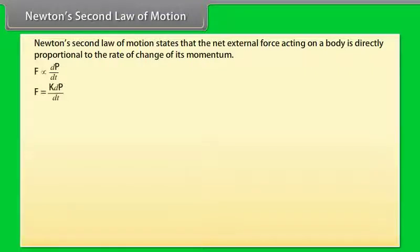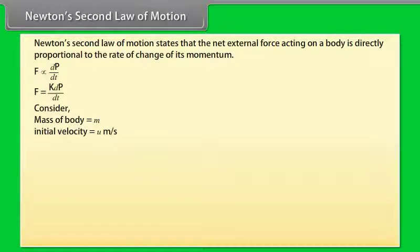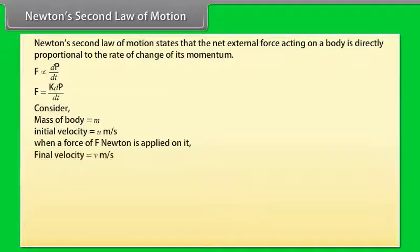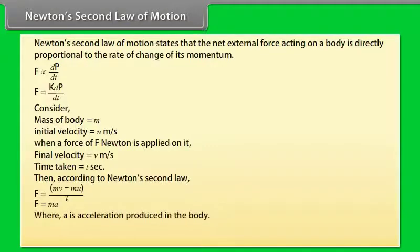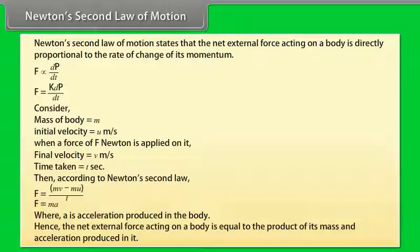Consider a body of mass M initially moving with a velocity of U meters per second. When a force of F Newtons is applied on it, its velocity becomes V meters per second after time T seconds. Then, according to Newton's second law, F is equal to MV minus MU divided by T, which equals MA, where A is the acceleration produced in the body. Hence, the net external force equals the product of mass and acceleration.